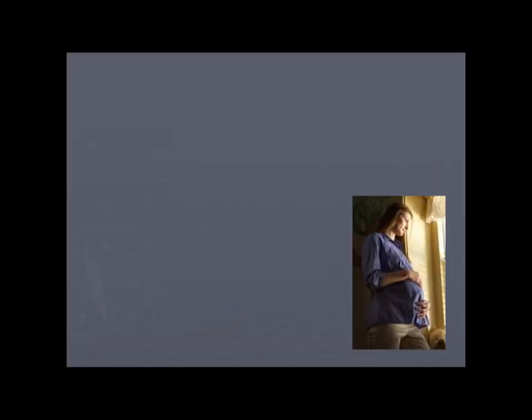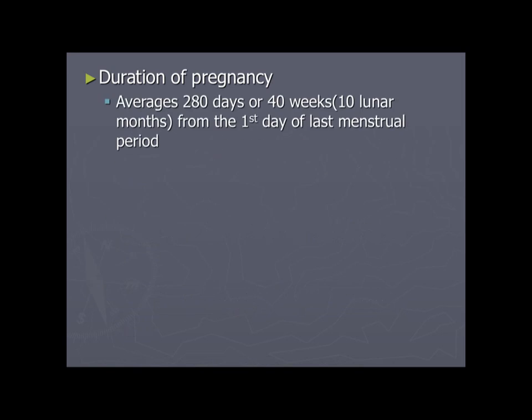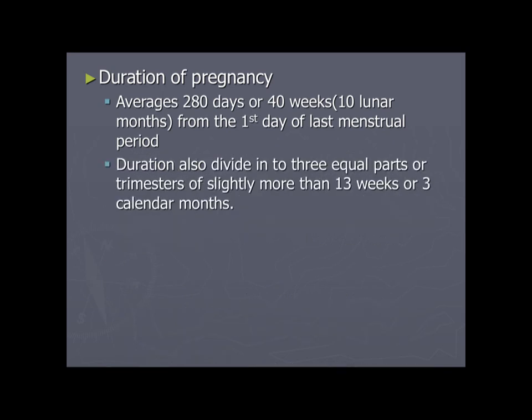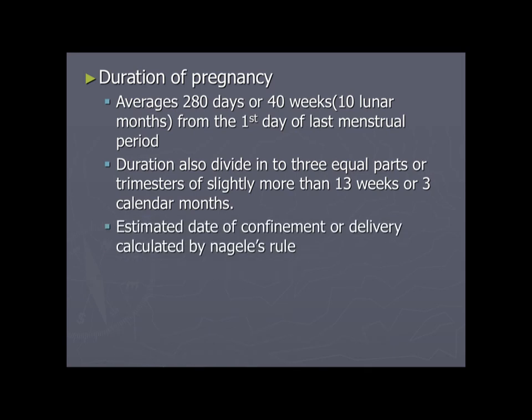Today we will see the physiological changes during pregnancy. An average duration of a pregnancy is 280 days or 40 weeks, that is 10 lunar months from the first day of the last menstrual period. The duration is also divided into three equal parts or trimesters of slightly more than 13 weeks or three calendar months.